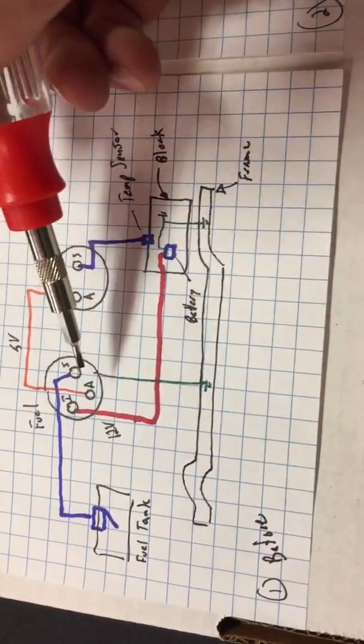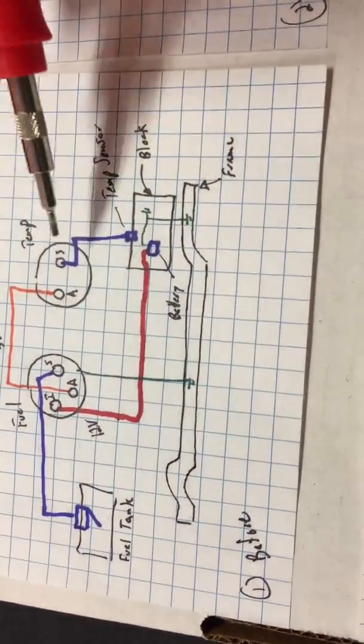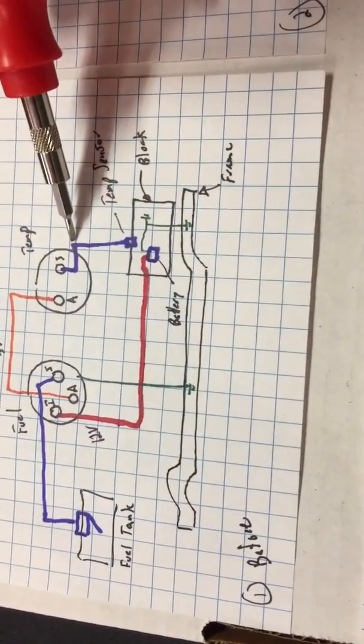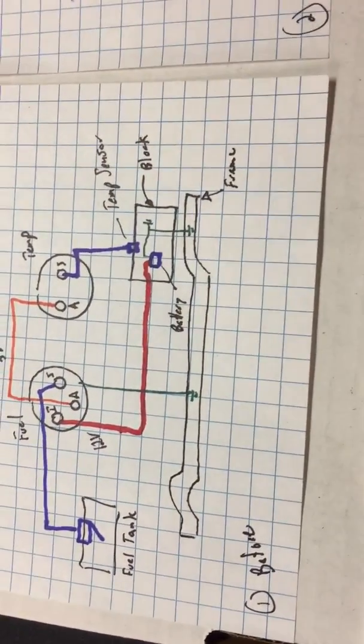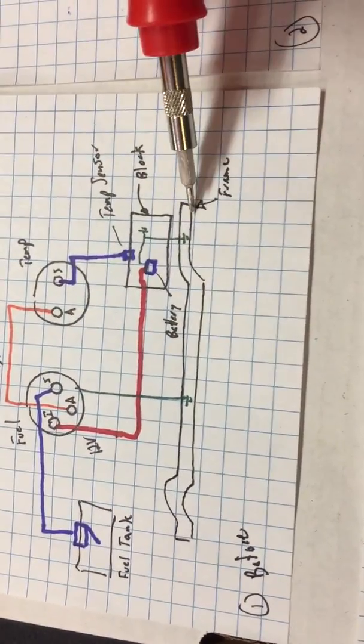But attached to the fuel gauge, you also have the sending wire that goes over to the level indicator, and you also have the sending wire going down to the temp sending unit on the block. Now, it's important to notice that obviously the block is grounded, the frame is grounded.